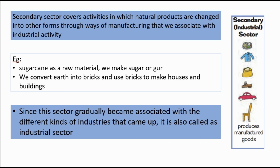The secondary sector covers activities in which natural products are changed into other forms through manufacturing — what we associate with industrial activity. For example, milk obtained from a cow can be processed into paneer, cheese, or ghee. These are made by different industries. So the secondary sector takes natural products and further manufactures them.